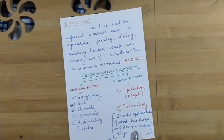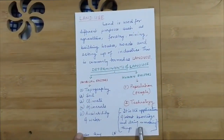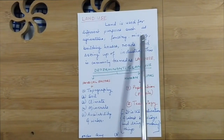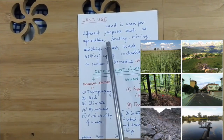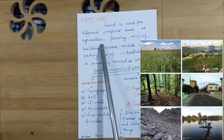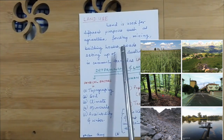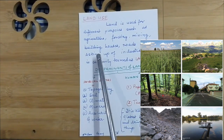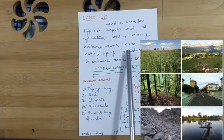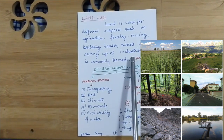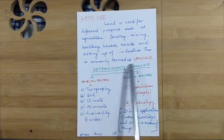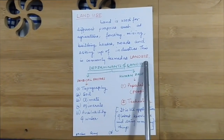Next comes land use. What is land use? Land is used for different purposes such as agriculture, forestry, mining, building houses, roads, and setting up of industries. This is commonly termed as land use.